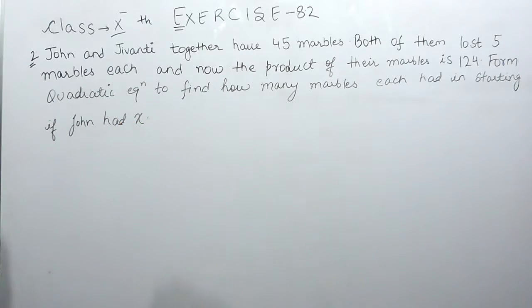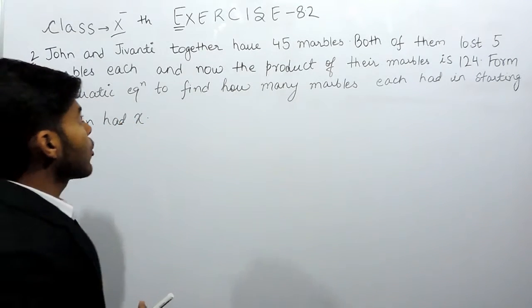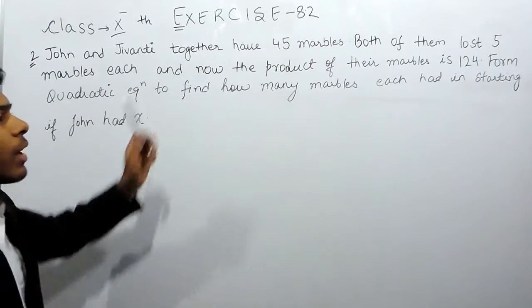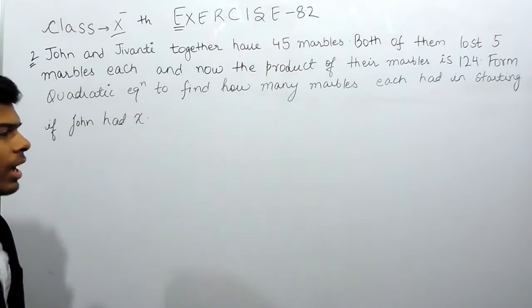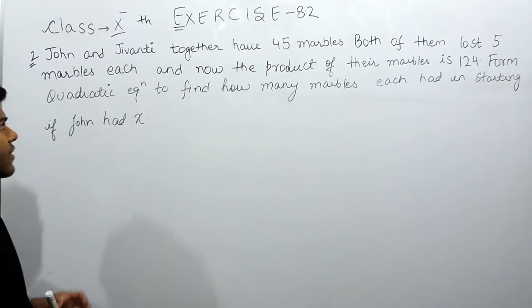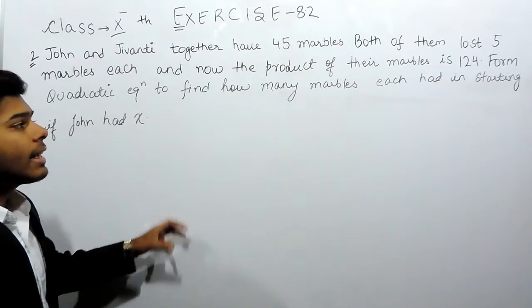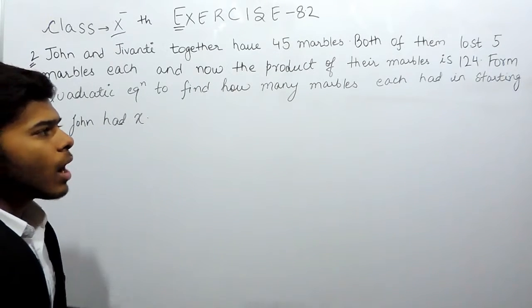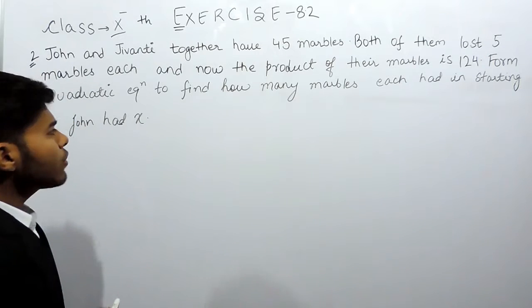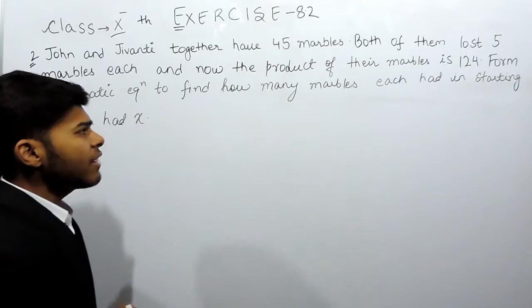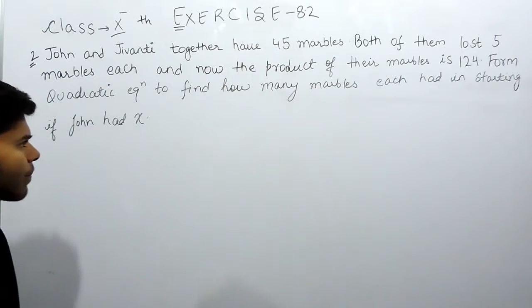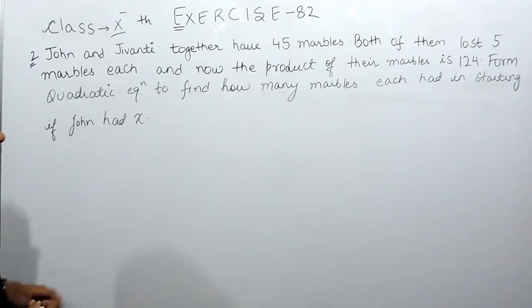Hello everyone, this is the second question of exercise 8.2 and the question says that these two persons together have 45 marbles. Now both of them lost 5 marbles each and the product of the marbles that they are having now after losing 5 each is equals to 124. We have to form a quadratic equation and calculate how many marbles each had in the starting and we are given that John had x.